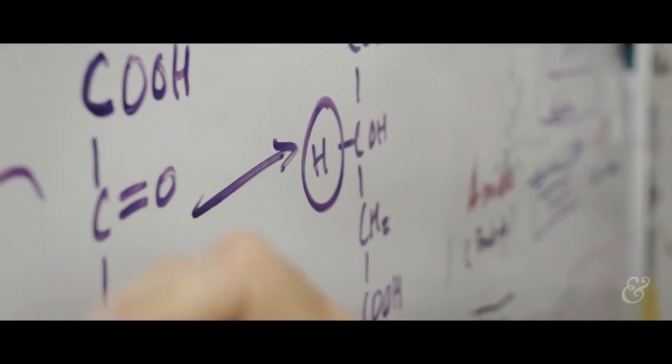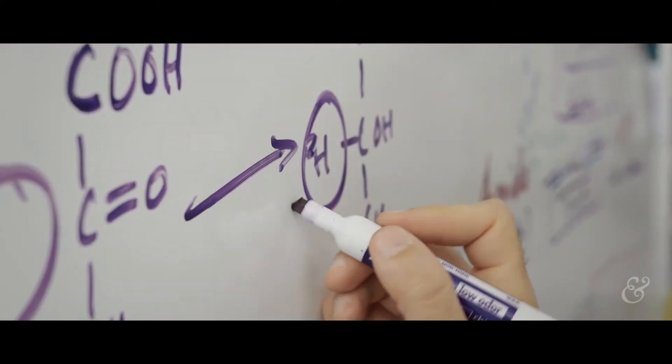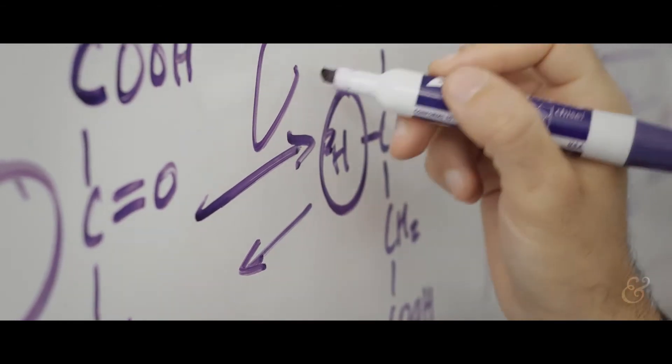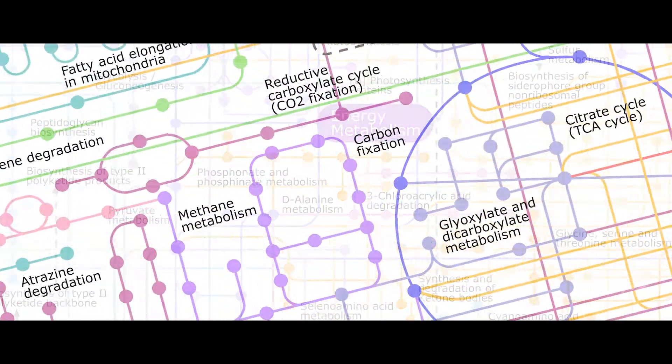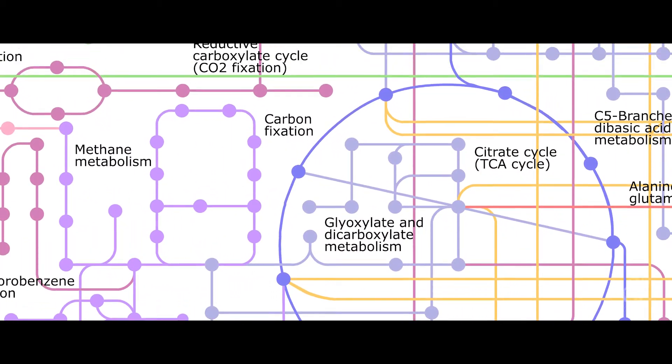Similarly, cells in general have many different ways of transforming nutrients or molecules from one point to another point. And what we're interested in in my lab is how that occurs and why cells choose to use one route compared to another.